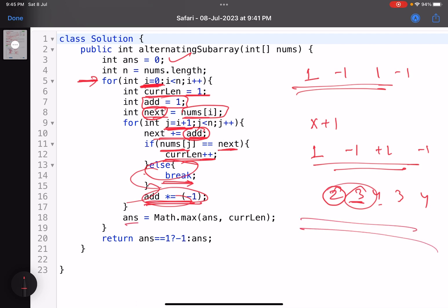So answer equals Math.max of answer and current length. This is what you need to do. Now most of the people are getting wrong answer because of this check - they have not added this check. What is that check? If you are getting a subarray of just length 1, that means you do not get a subarray even of length 2. In that case, you have to return minus 1 and not 1. So that's the only other condition that we need to add and you'll not get wrong answer. That's what I've done here.